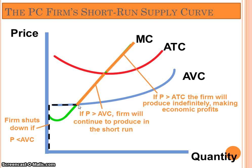At the shutdown point the firm is indifferent about whether to produce or not. Below the shutdown point, the firm definitely does not produce. That brings us to the end of our short-run perfect competition lecture. What you need to understand is the characteristics of a perfectly competitive market, the relationship between the market and individual firms, and the four short-run scenarios: earning profits, breaking even, producing to minimize losses, or shutting down immediately.